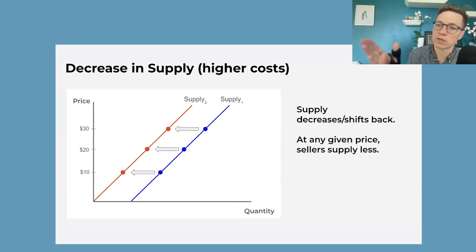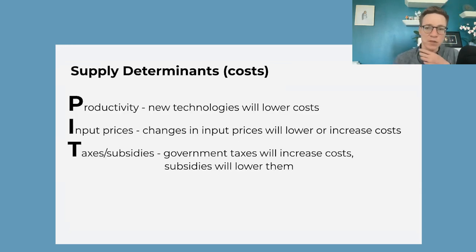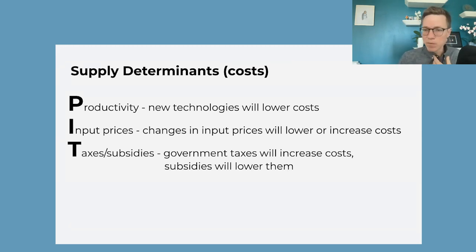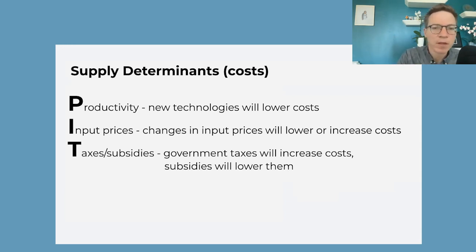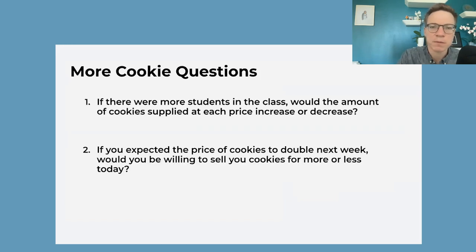Our supply shifters — the things related specifically to cost — are going to be productivity, like new technology (that was the robot); input prices, which is your cost of ingredients; and then taxes and subsidies, things that the government might do to make your costs go up or down. We've got a nice little acronym here, PIT, to help students remember that.